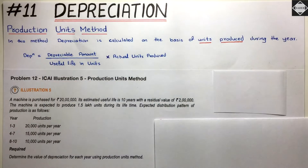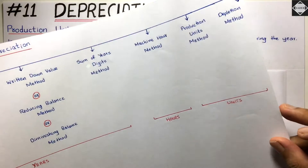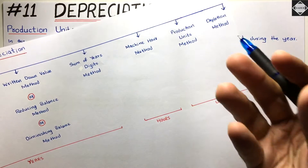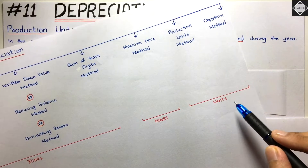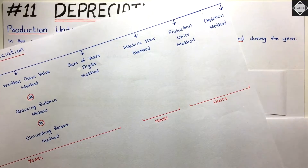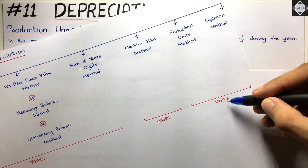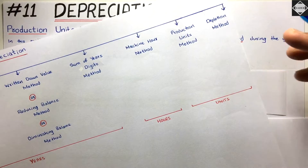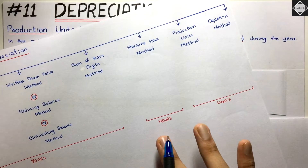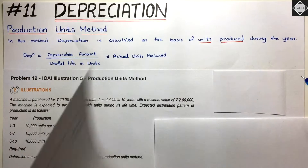This method is really simple. The main thing you have to understand is that in this method, the useful life of the asset will be in the form of units — how many units the machine can produce. That's how the useful life will be measured here, in form of units or numbers, not in form of years or hours.